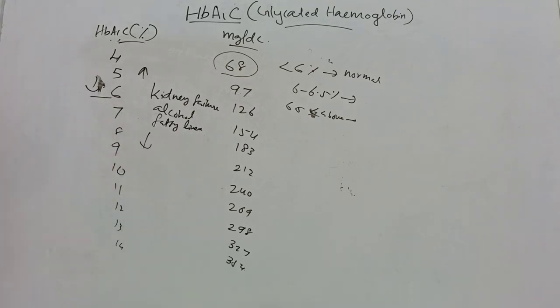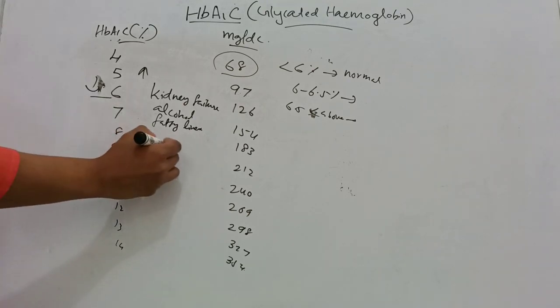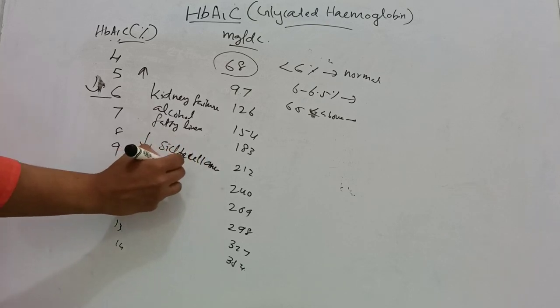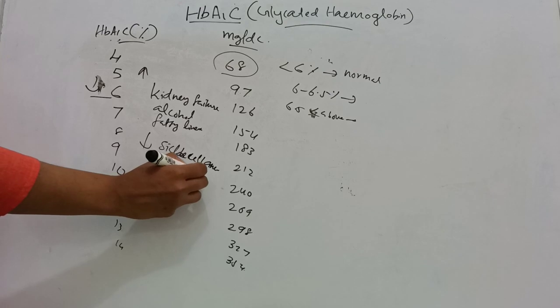Falsely decreased HbA1c levels are seen in sickle cell anemia and chronic blood loss.